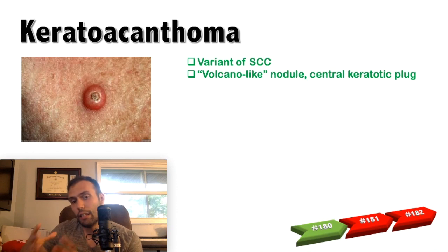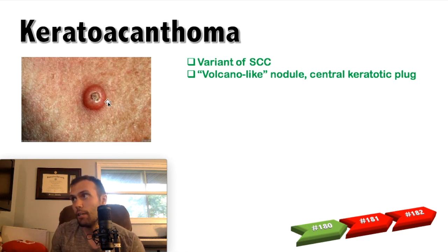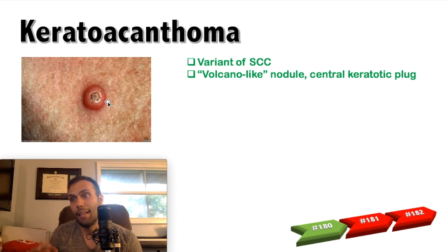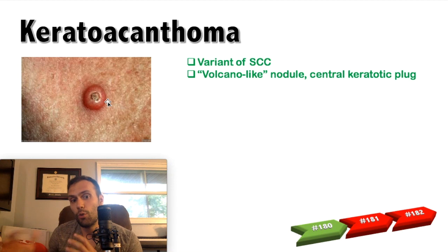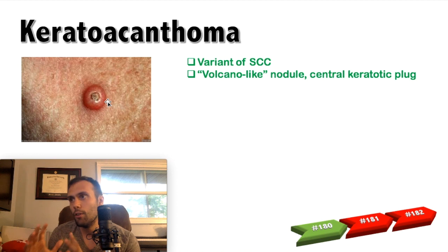If you just see a lesion on the skin, it's hard to know exactly what you're dealing with — is it basal cell or squamous cell? The exception is keratoacanthoma. If you see this elevated, very nodular, volcano-like lesion — very elevated off the skin with a central keratotic plug — this is classic for keratoacanthoma. It's a variant of squamous cell carcinoma, very rapidly growing, but it tends to regress spontaneously. It's typically a well-differentiated squamous cell carcinoma. Know what it looks like on gross appearance and that it's a variant of squamous cell carcinoma.